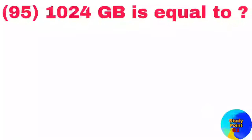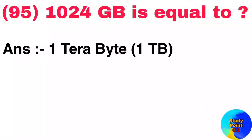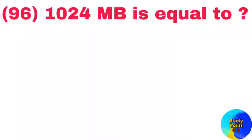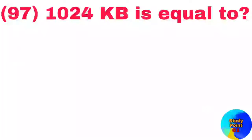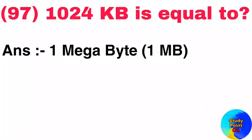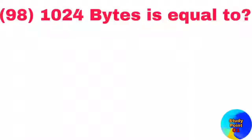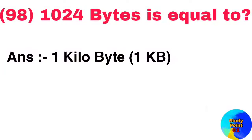Question number 94: 1024 TB is equal to 1 Petabyte. Question number 95: 1024 GB is equal to 1 Terabyte. Question number 96: 1024 MB is equal to 1 Gigabyte. Question number 97: 1024 KB is equal to 1 Megabyte. Question number 98: 1024 bytes is equal to 1 Kilobyte.